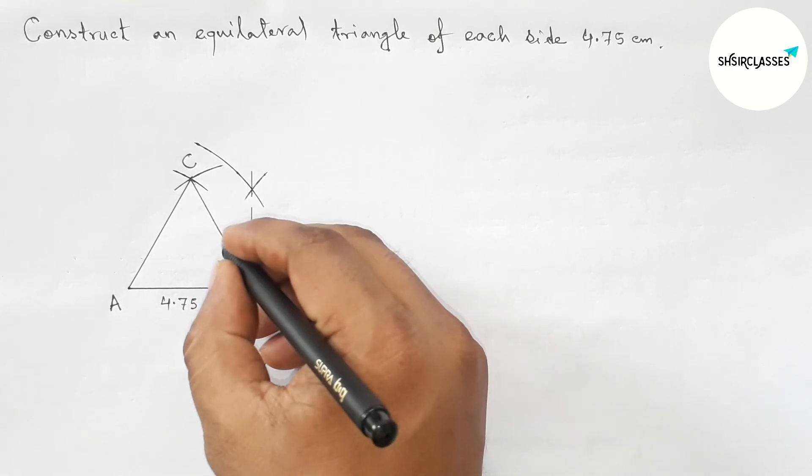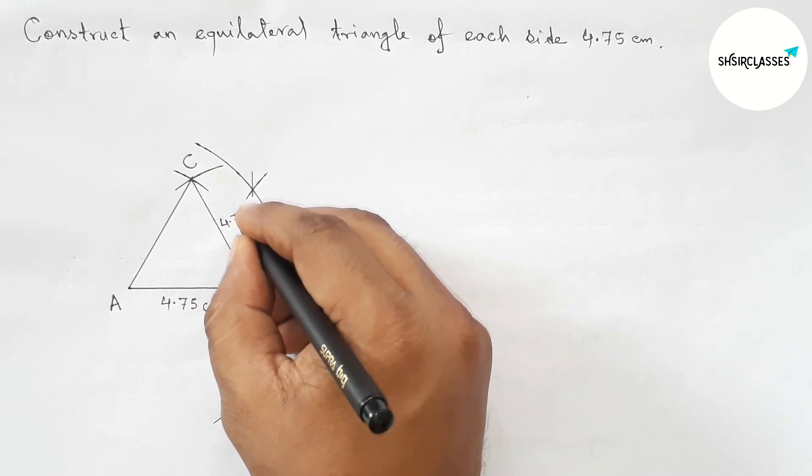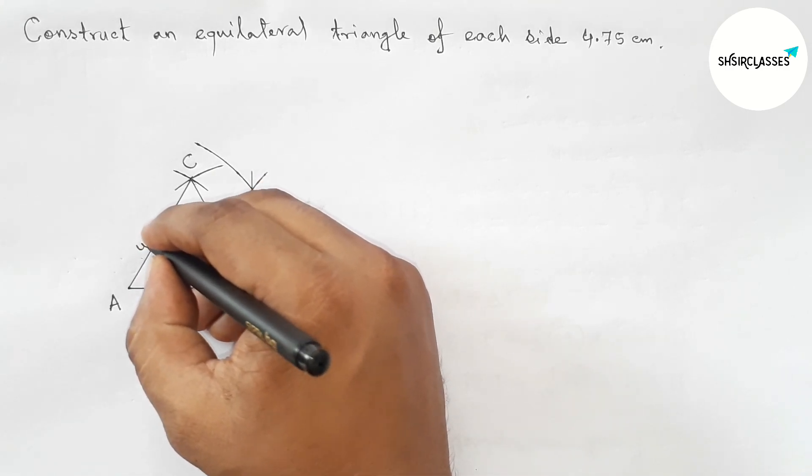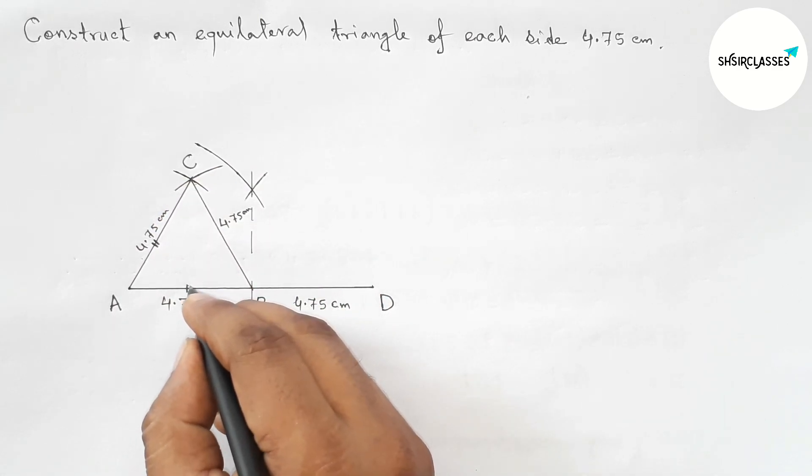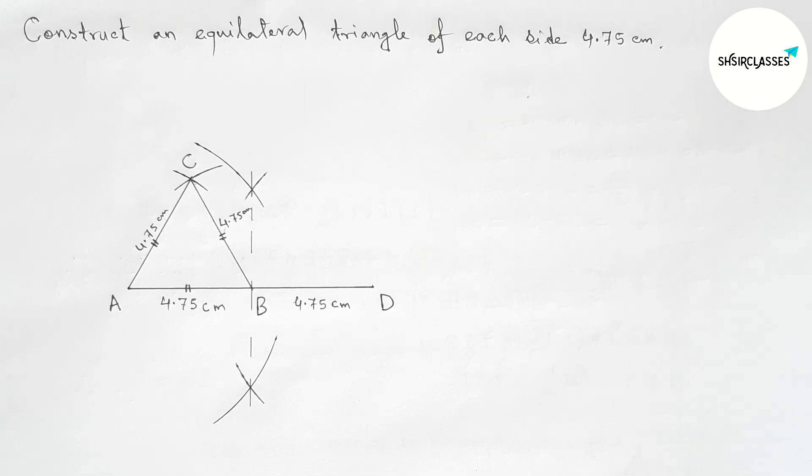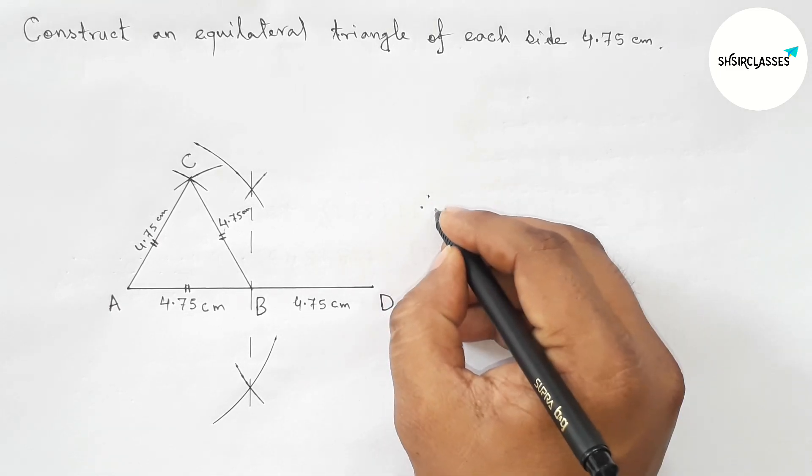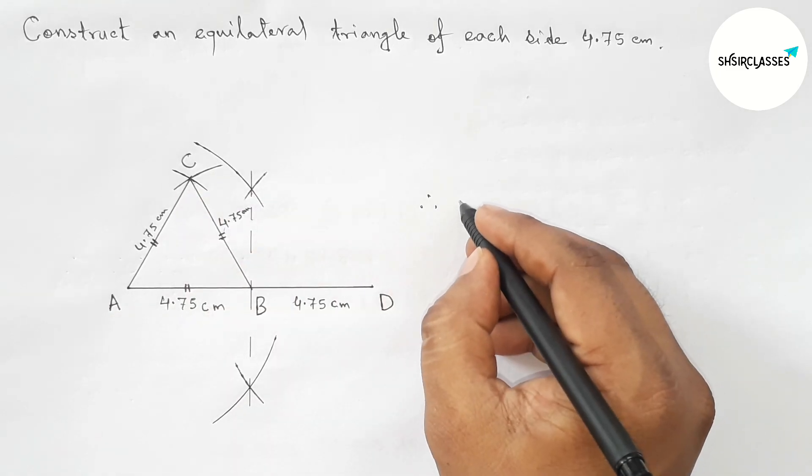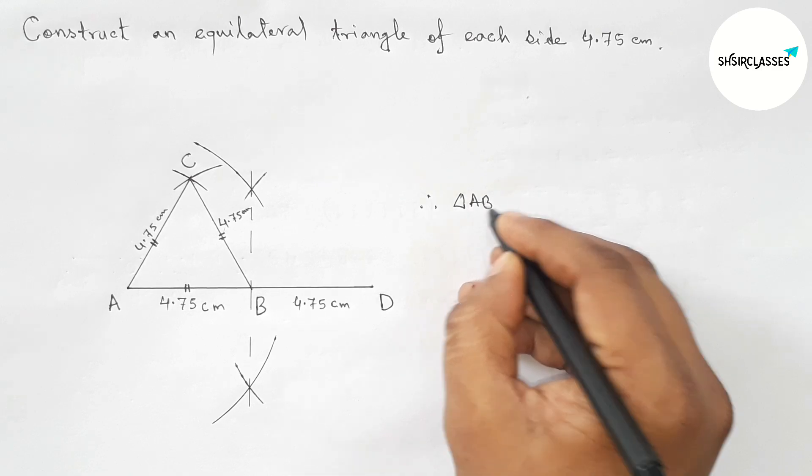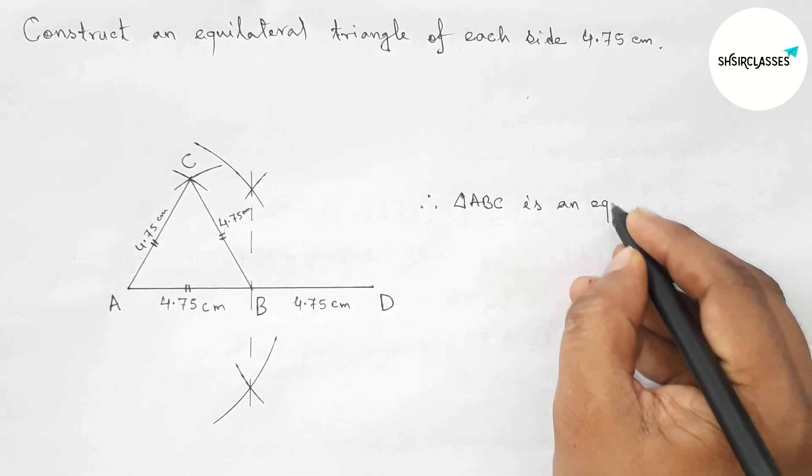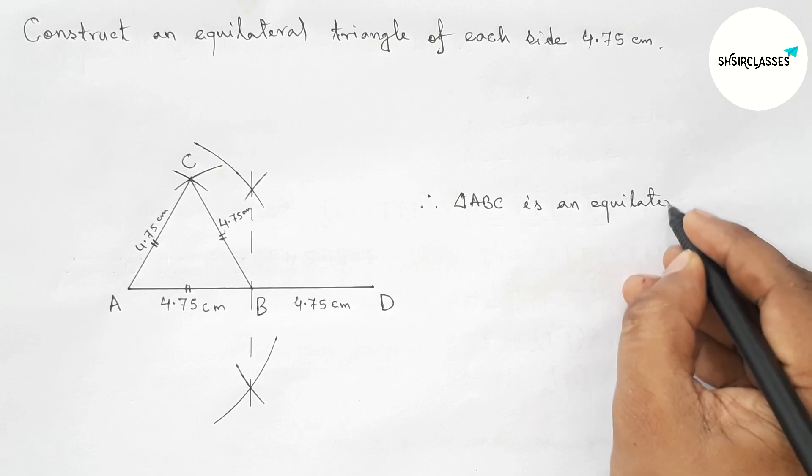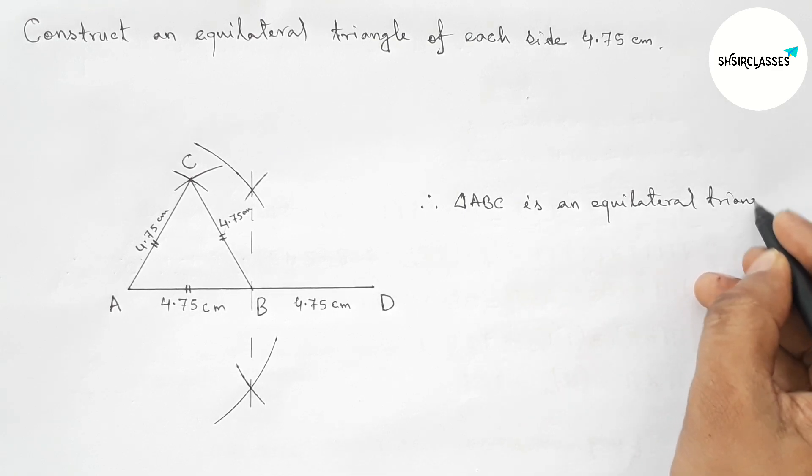So here this side 4.75 centimeter and this side also 4.75 centimeter, so here all the sides are equal. So this is our required equilateral triangle of each side 4.75 centimeter. Therefore here ABCD is an equilateral triangle of each side 4.75 centimeter.